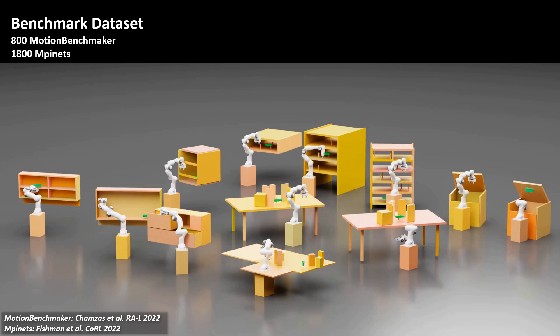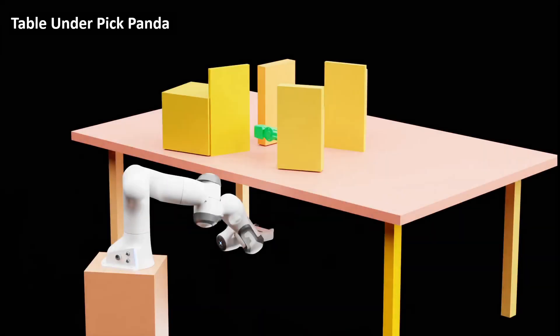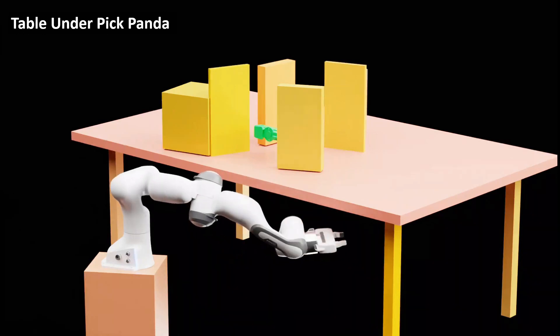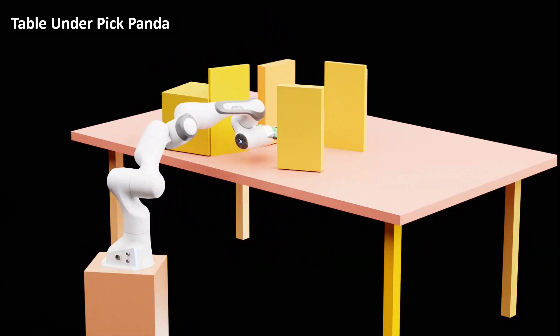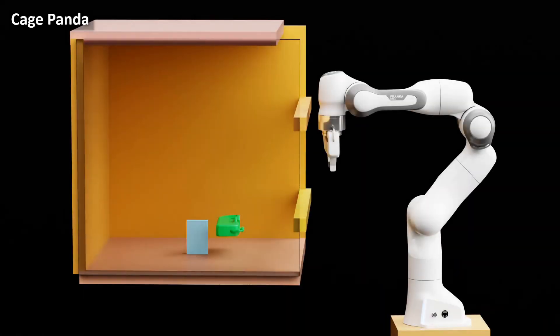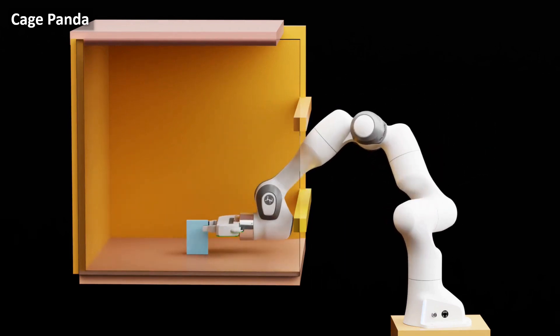We benchmark on 2600 problems from the Motion Benchmark and Motion Policy Networks datasets. Some of the problems from the dataset are shown here. In this example, Franka Panda leverages Kurobo to move from under the table to the top of the table. In this constrained environment, the robot is able to move between the two bars to reach the goal pose, leveraging Kurobo's motion generation pipeline.